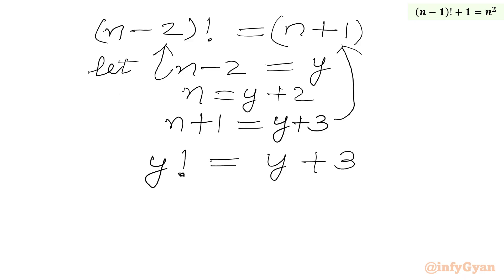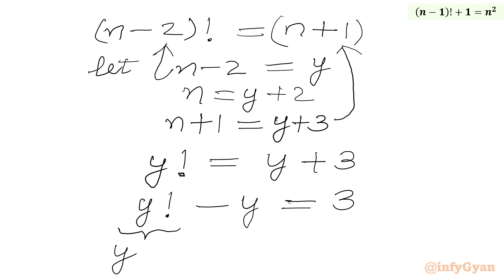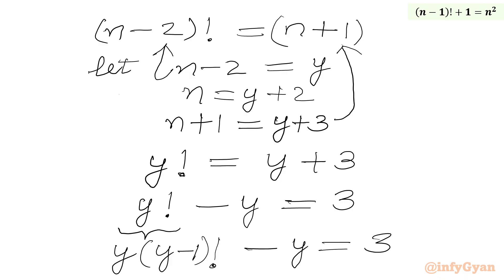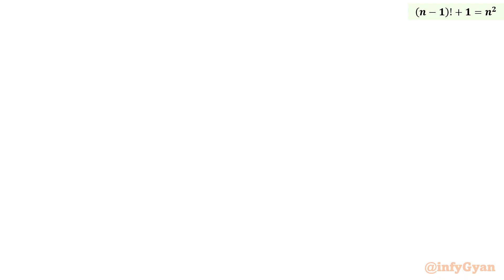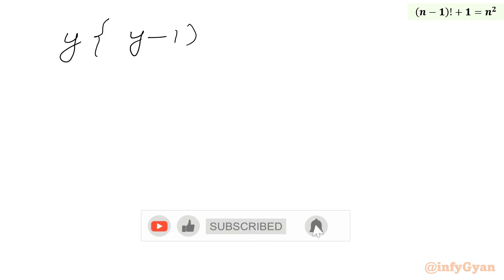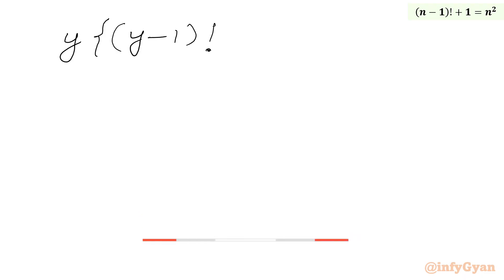Now we will subtract y from both sides, giving y factorial minus y equal to 3. Using the recursive formula again, we can write y factorial as y times (y minus 1) factorial. So y times (y minus 1) factorial minus y equals 3. Now we can take y as a common factor from the left hand side.